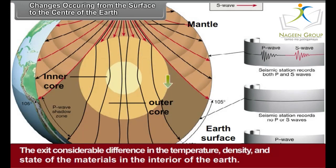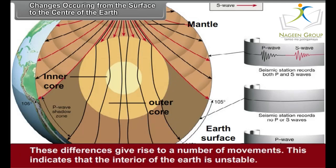There exist considerable differences in the temperature, density, and state of the materials in the interior of the Earth. These differences give rise to a number of movements. This indicates that the interior of the Earth is unstable.